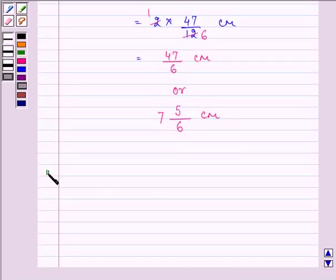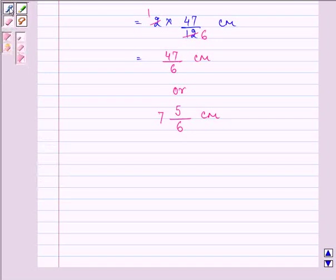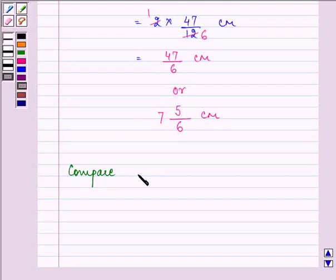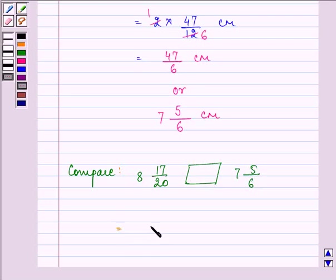So let's name it as 8 and 17 by 20 to 7 and 5 by 6. Let's convert it into improper fraction. We have it as 177 by 20 and here we have it as 47 by 6.